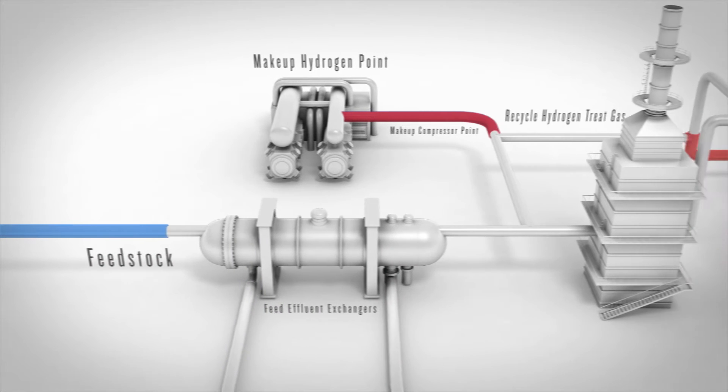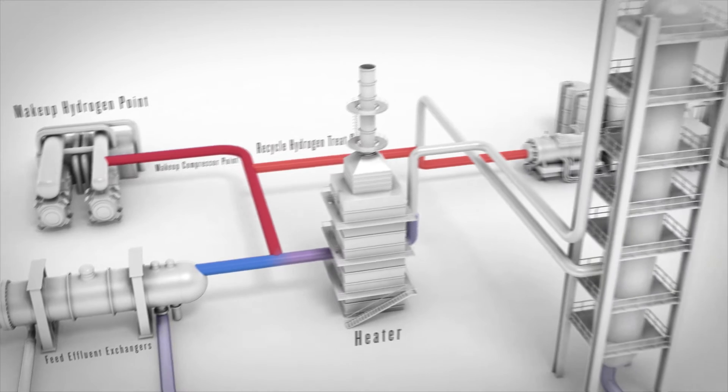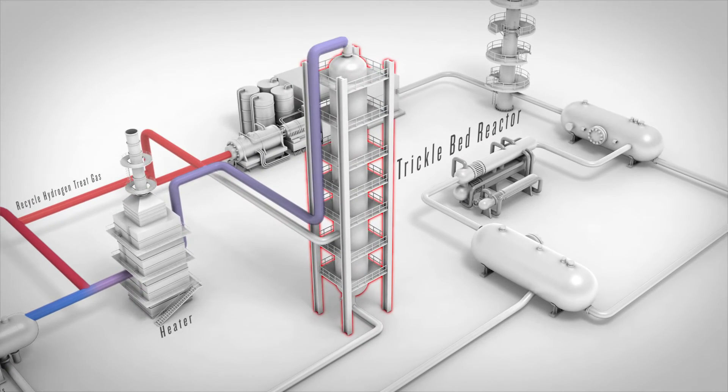Feedstock flows in and mixes with combined makeup and recycled hydrogen. Flows through a two-phase trickle bed reactor packed with catalyst.